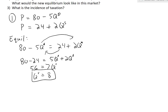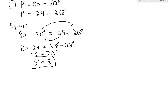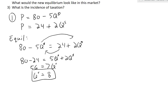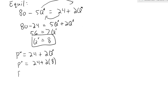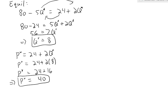Q star equals 8 is our equilibrium quantity with no taxation. To find the equilibrium price we plug that quantity into either the demand or supply curve. Using supply: P star equals 24 plus 2 times 8, so P star equals 24 plus 16, giving P star equals 40. Our equilibrium is a quantity of 8 million liters and a price of 40 cents per liter.